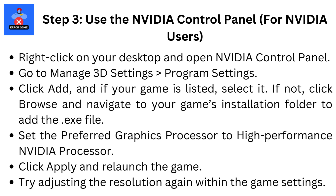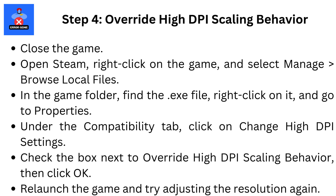Step 4: Override High DPI Scaling Behavior. Close the game. Open Steam, right-click on the game, and select Manage > Browse Local Files. In the game folder, find the .exe file, right-click on it, and go to Properties. Under the Compatibility tab, click on Change High DPI Settings. Check the box next to Override High DPI Scaling Behavior, then click OK. Relaunch the game and try adjusting the resolution again.